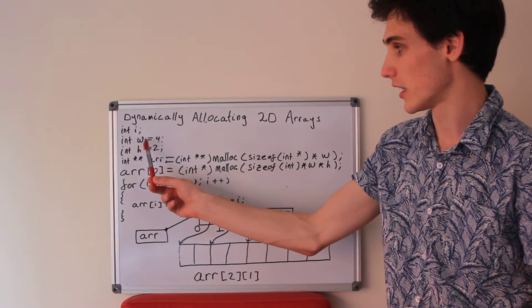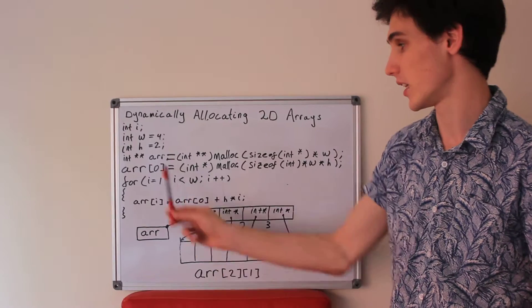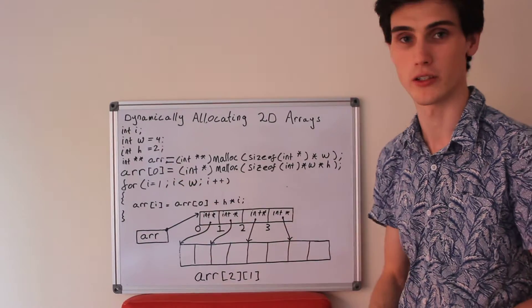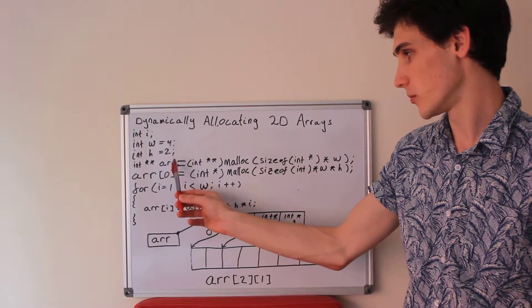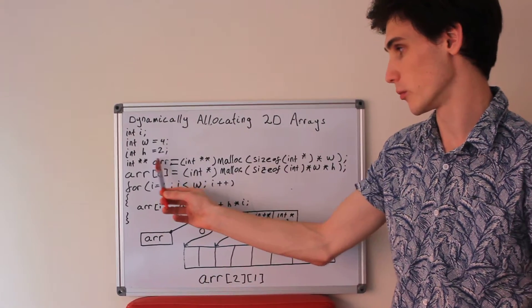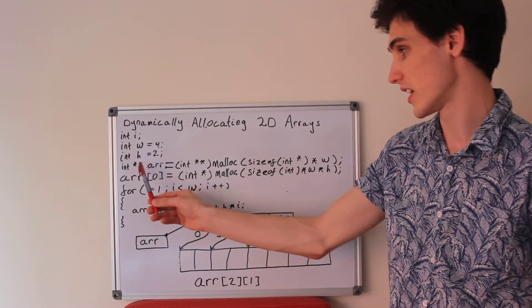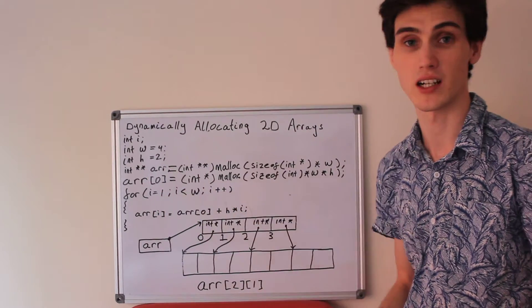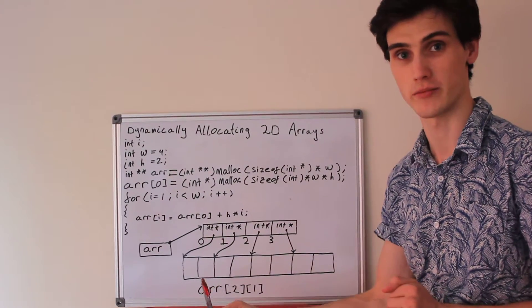Here I have declared a width, which is 4, and a height, which is 2, and also this variable r, which will be our two-dimensional array. It is declared as int star star — that's a pointer to an array of pointers.